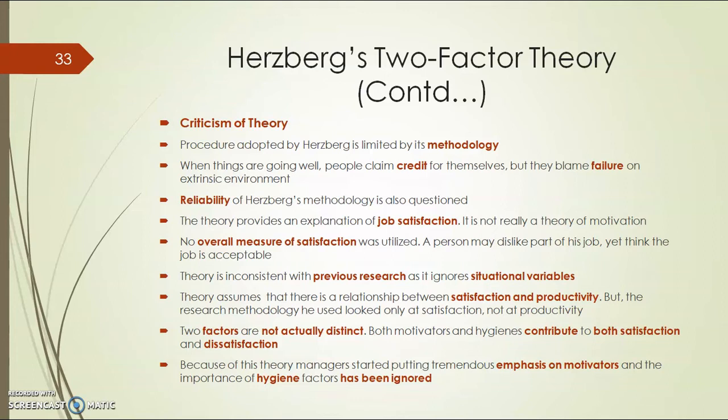A very common criticism is that this theory is in essence a theory of job satisfaction, not a theory of motivation — which is why we also covered it in the job satisfaction chapter. Also, no overall measure of satisfaction was utilized. Unlike Maslow, who tried to study a person holistically — needing food, shelter, friends, and self-fulfillment — here we are only looking at two factors: hygiene factors and motivators.